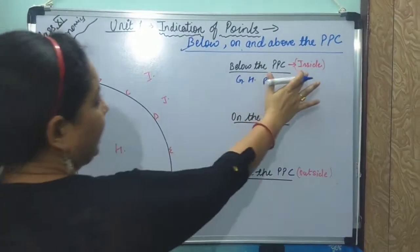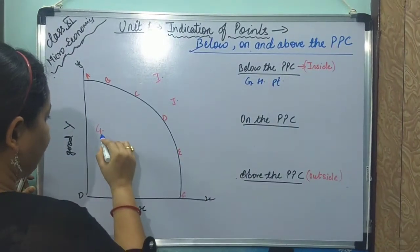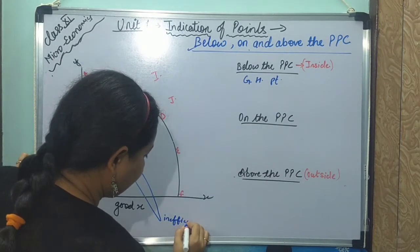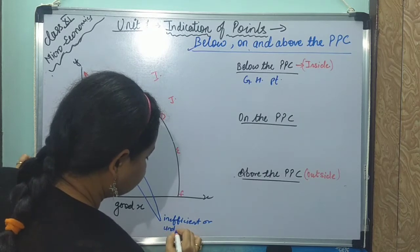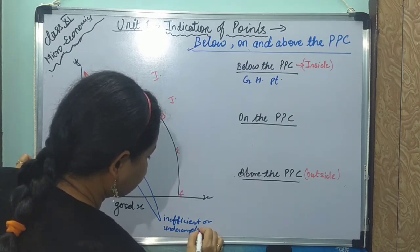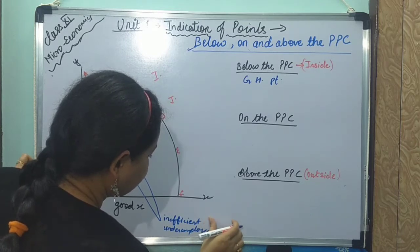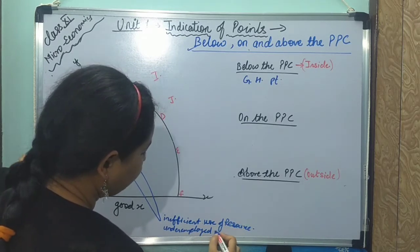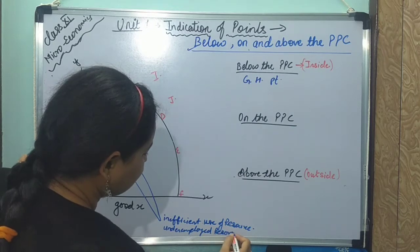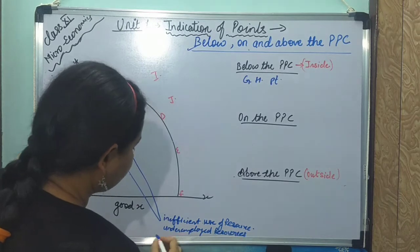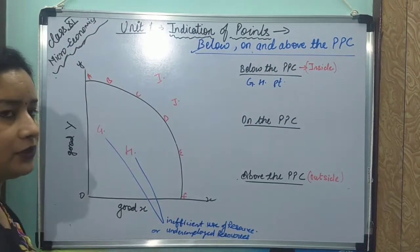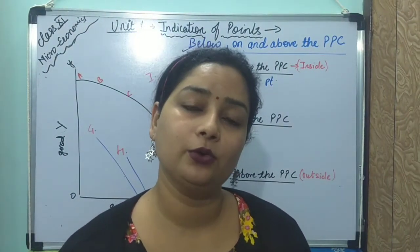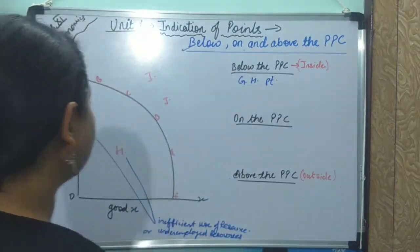Points inside the PPC curve — like G and H — indicate inefficient or underemployed use of resources. This means technology has not been fully used, and resources have not been fully applied for the purpose of economic production. These are points below the PPC curve indicating underemployment of resources or inefficient use of resources.